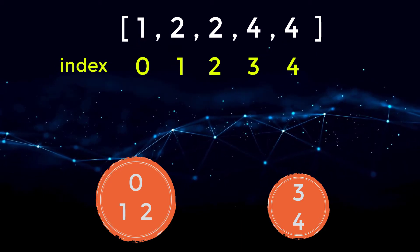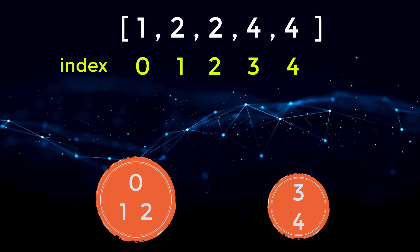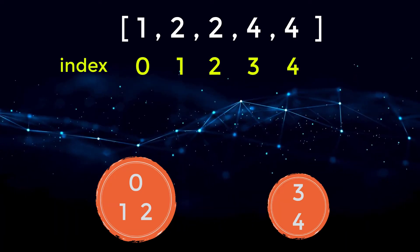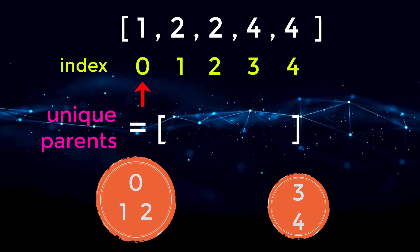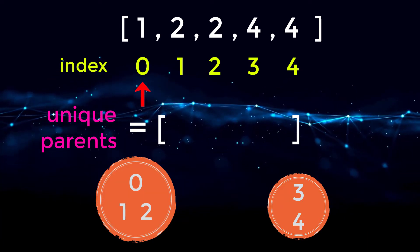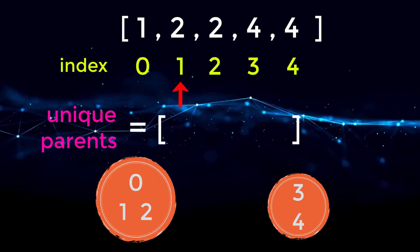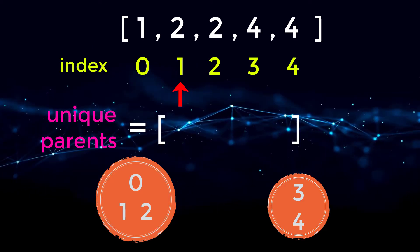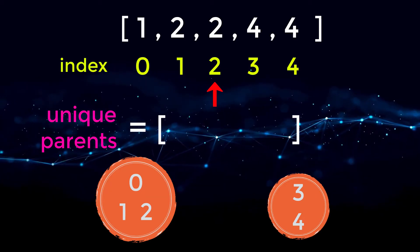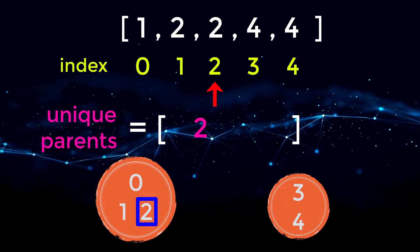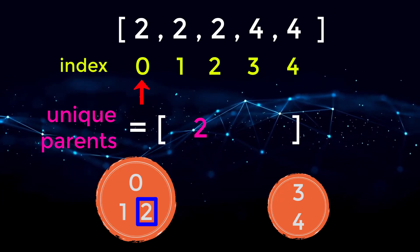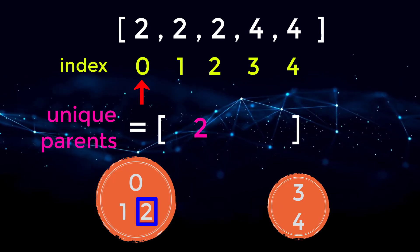We've successfully iterated over all edges and created our subsets. Now to determine connected components, we follow paths to count how many unique parents we have. Node zero has a value of one, meaning it is not the parent, so we continue down that path to index one, which has a value of two. Index two has a value equal to its index, so node two is the parent. We add node two to our set and using path compression, we set zero to point directly to node two, so finding zero's parent later is only one step away.